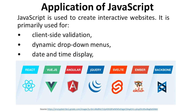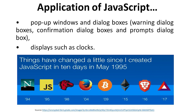Applications of JavaScript include client-side validations, dynamic drop-down menus, and date and time displays. JavaScript is used to create interactive websites. It provides pop-up windows and dialog boxes including warning dialog boxes, confirmation dialog boxes, and prompt dialog boxes. It also enables displays such as clocks.